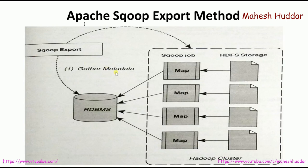In the pictorial representation of the Sqoop export method: first, metadata information is extracted from the database. Once the metadata information is available, Sqoop uses that metadata — database name, table name, and so on — to get the data from HDFS storage. Each piece of data is divided into different data blocks, each block is assigned to one mapper, and the data is pushed into RDBMS storage.